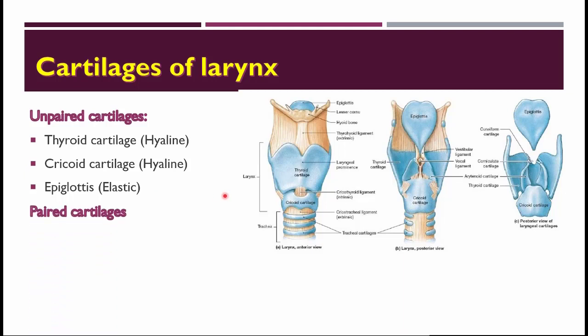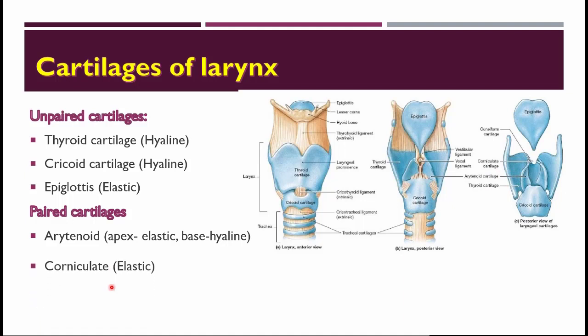With respect to the paired cartilages, you have the arytenoid cartilage — a pair of arytenoid cartilages. The arytenoid cartilage is partly hyaline and partly elastic in nature. The apex and the vocal process are of the elastic type, whereas the remaining part of the arytenoid cartilage is hyaline in nature.